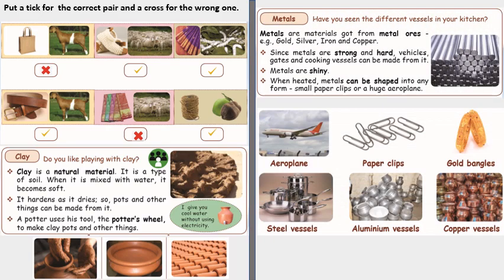Now we are going to talk about metals. Metals are materials from the metal ores like gold, silver and iron and copper. Now these metals are strong and hard. Vehicles and gates and cooking vessels can be made from it. And also metals are shiny. When heated they can be shaped into any form, smaller paper clips or a huge aeroplane. So examples of metals are aeroplane, paper clips, gold bangles, steel vessels, aluminium vessels, copper vessels etc.